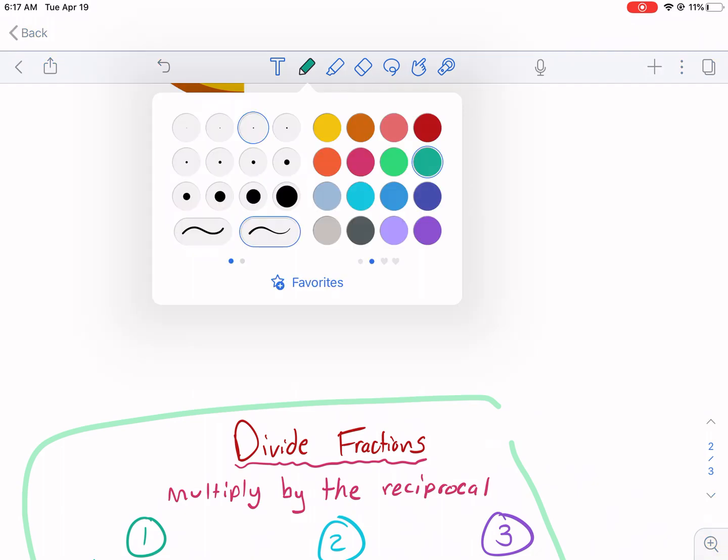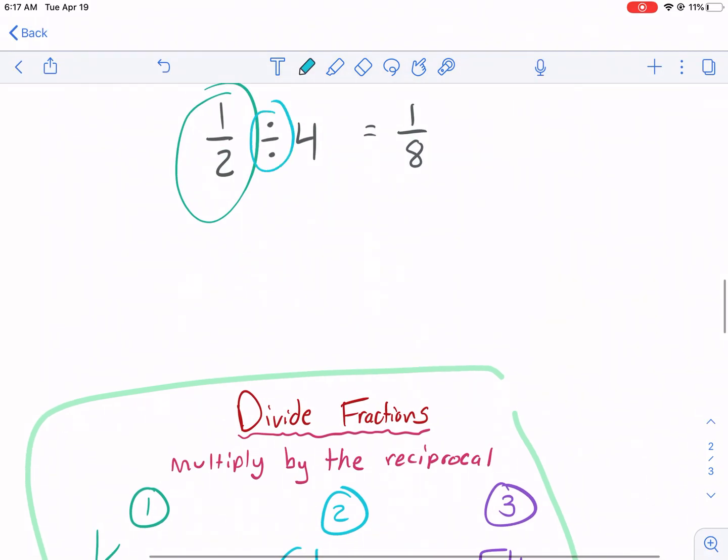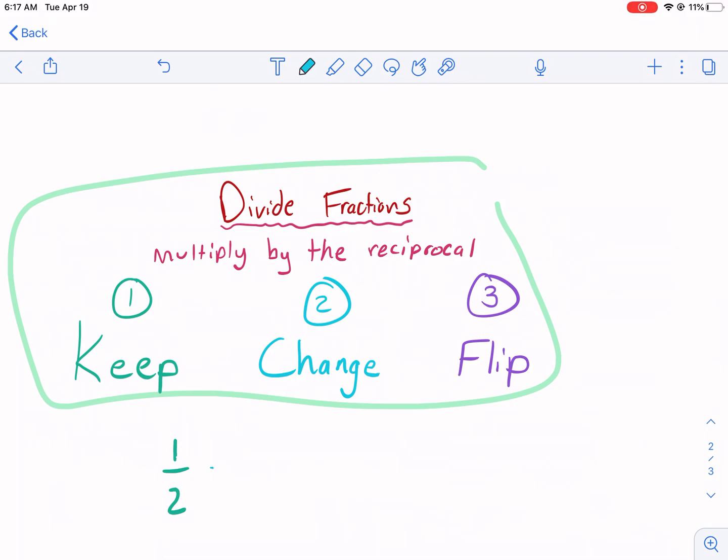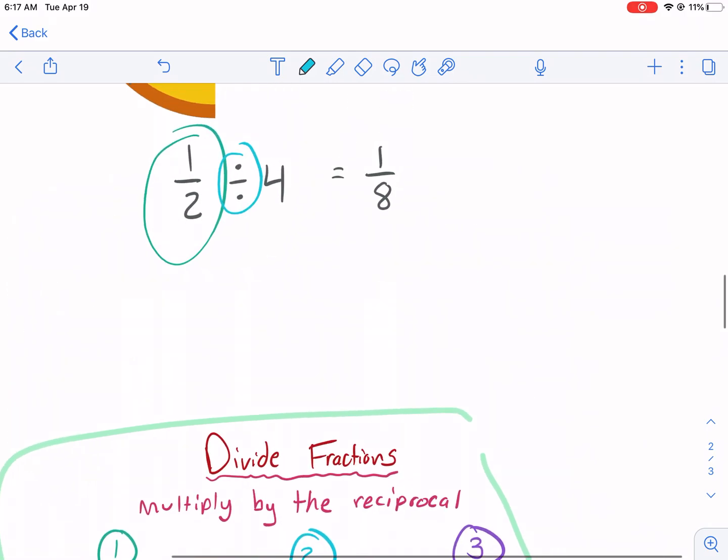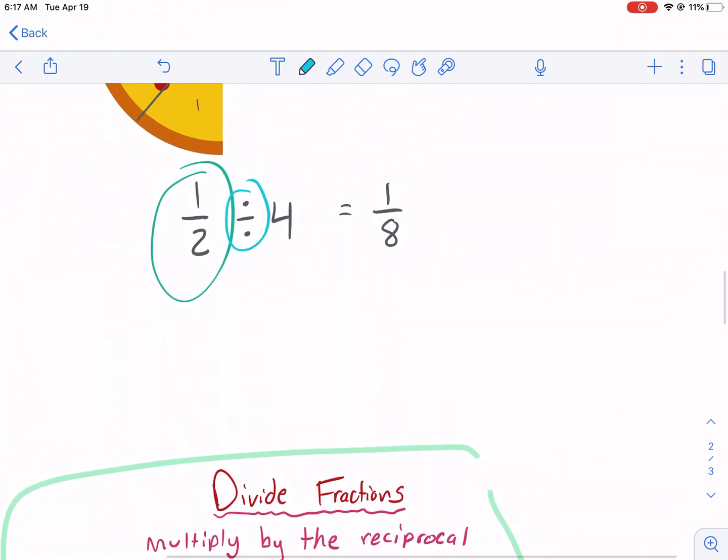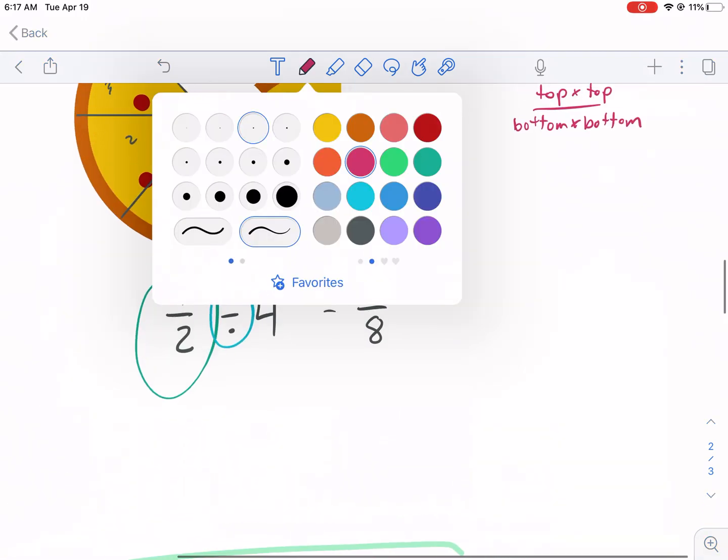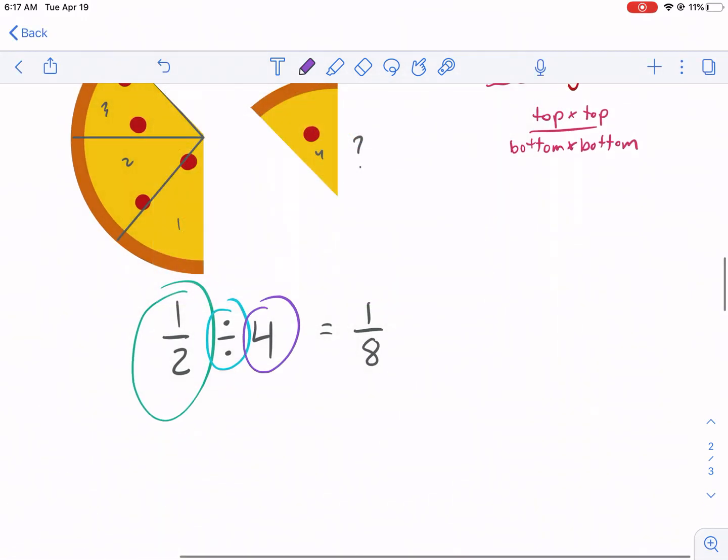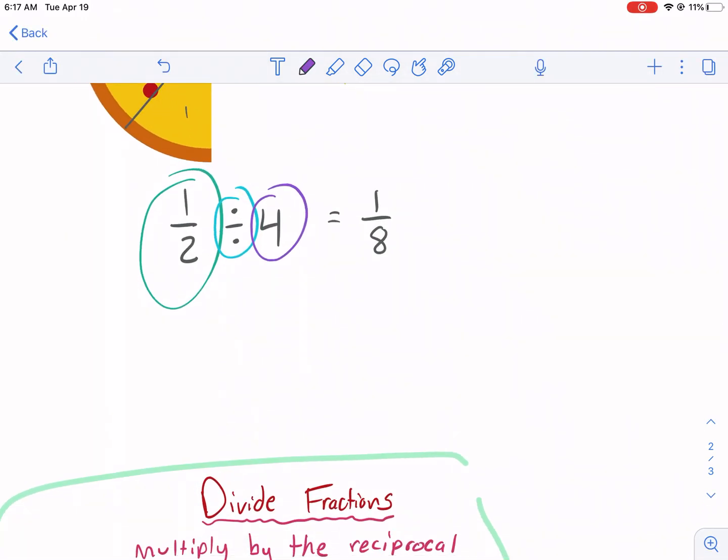We're going to change. What do we change it to? We want to change this to a multiplication problem because division is often very difficult to visualize or think about. And then lastly, we're going to flip. We are going to flip this to be the reciprocal. So how do you change four to be the reciprocal? Four is the same thing as 4/1. I like to put it over one anytime you have a whole number because it's easier to flip.